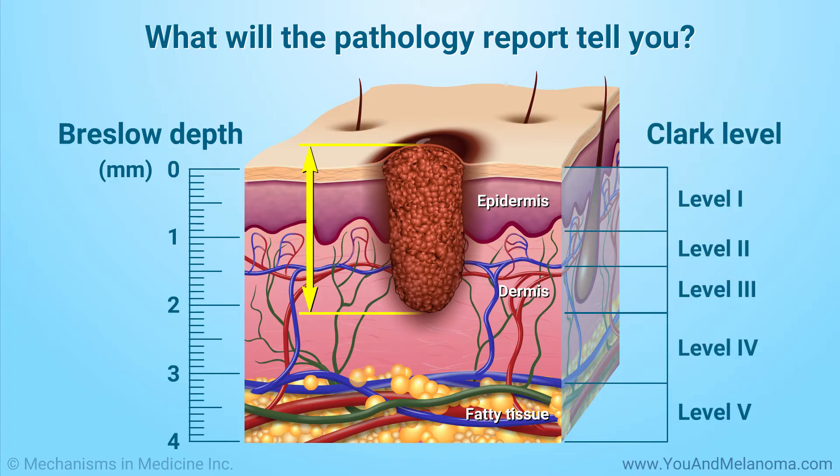This is not the tumor stage. Doctors no longer use the Clark level to predict a patient's outlook, but it is still usually included in the pathology report.